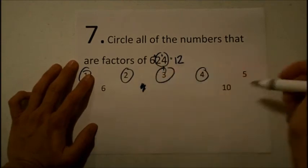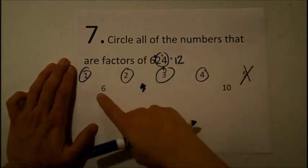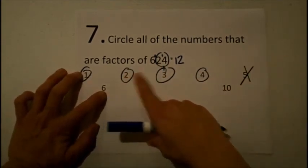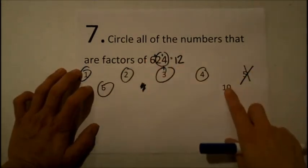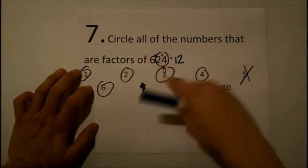5 is not a factor because it does not end in a 5. 6 is a factor because I already know that 2 and 3 are factors, so we will keep 6. And 10 is not a factor because it does not end in a 0.